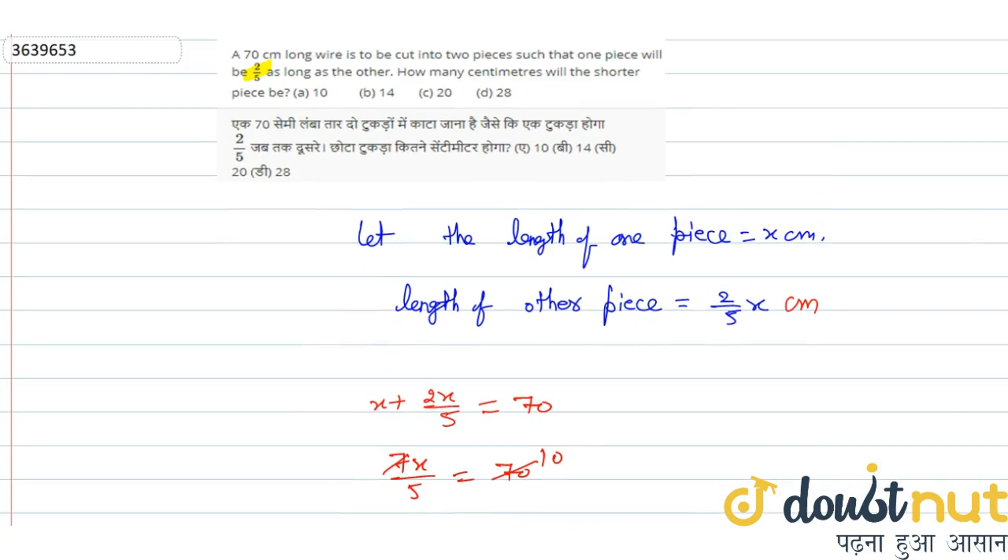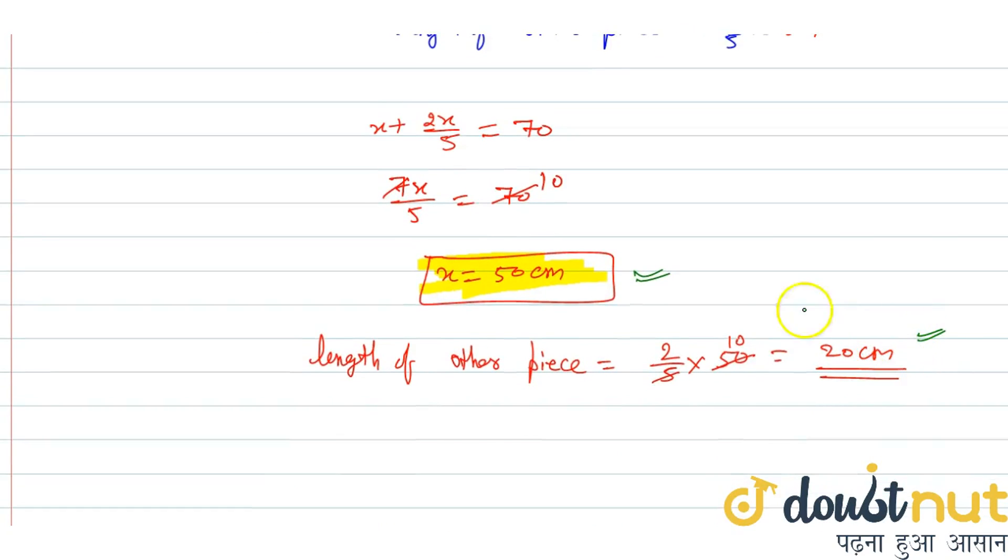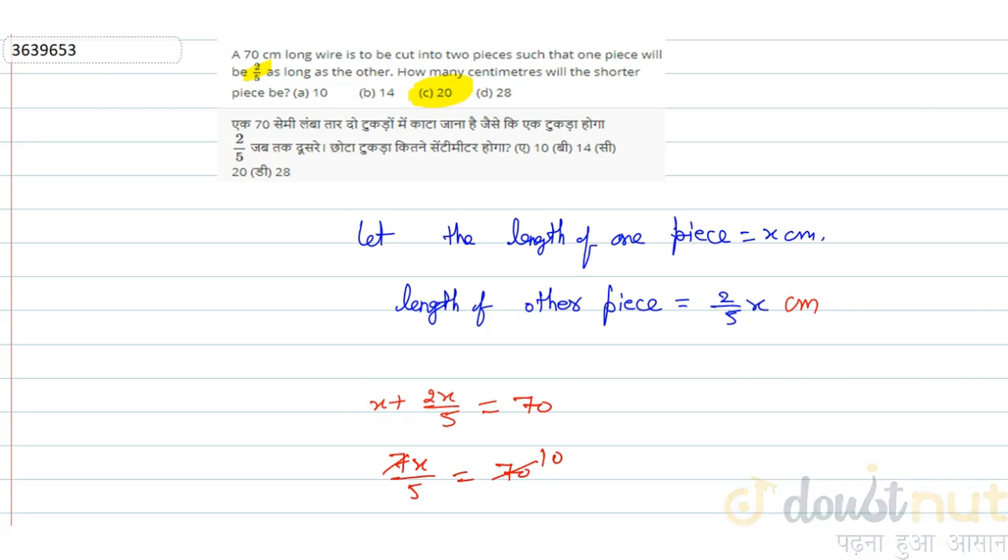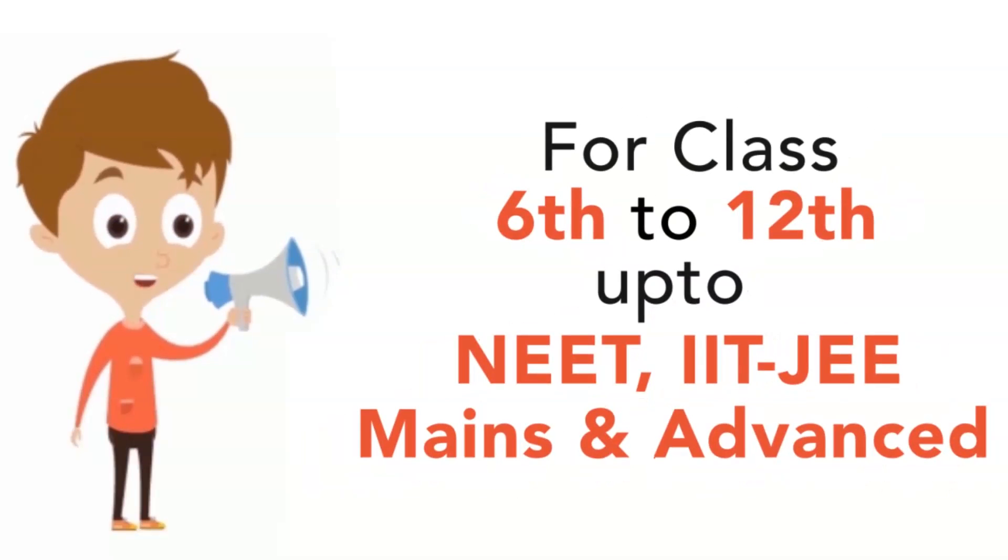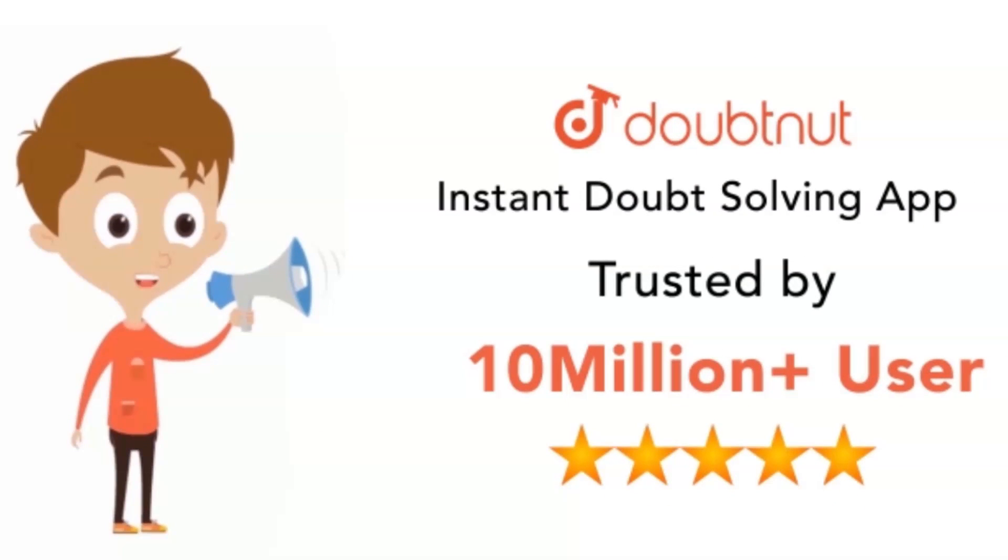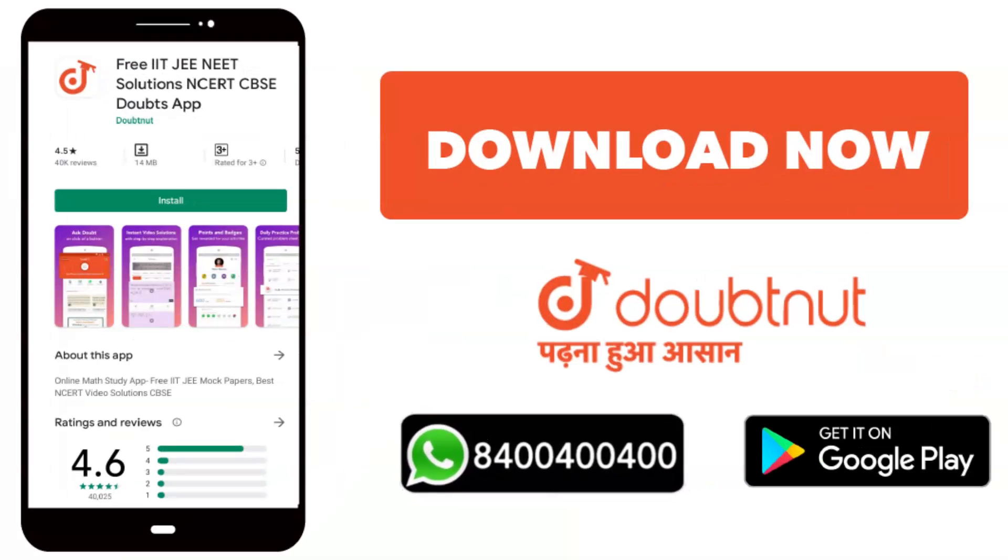The question asks how many centimeter will be the shorter piece. We need to find the shorter piece. Between 50 and 20, the shorter piece is 20. So the length of the shorter piece is equal to 20 centimeter. This will be the correct answer, option C.